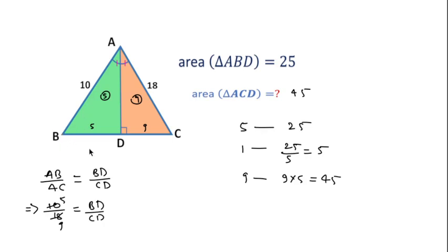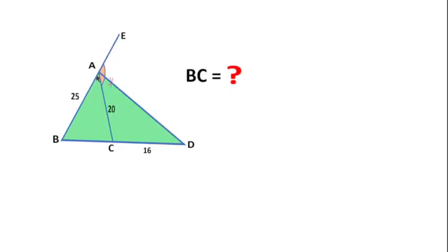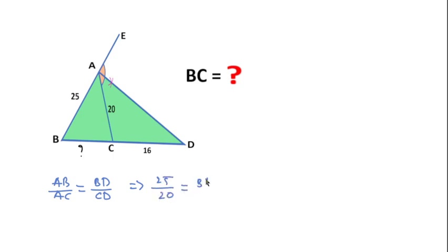We can also find the area of the whole triangle ABC: 5 plus 9 is 14, so 14 times 5 equals 70. Now for the second question: the length of AB is 25, AC is 20, and CD is 16. We need to find the length of BC. Using the exterior angle bisector theorem: AB over AC equals BD over CD, so 25 over 20 equals BD over CD, which simplifies to BD over CD equals 5 to 4.